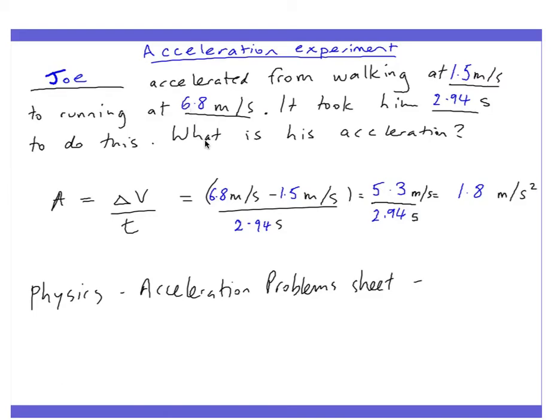So the examiners will say to you, work out his acceleration. Easy peasy. So you just need to know, how much has his velocity changed by? Well, that's his final speed, and that was his initial speed. So basically it's changed by 5.3. And how long did it take for that change to happen? Well, 2.94. So if you do that divided by that, turns out is 1.8 metres per second squared. And that is how to take care of that. Thank you very much.